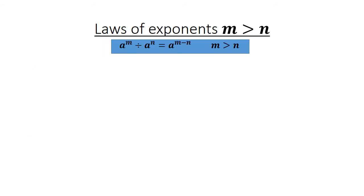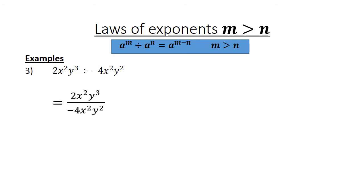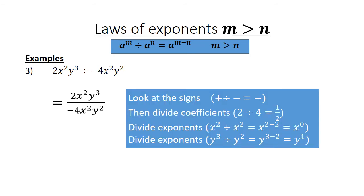Laws of exponents. 2x to the power of 2, y to the power of 3, divided by negative 4, x to the power of 2, y to the power of 2 equals. Now you are going to divide — look at the signs first. A positive divided by a negative equals negative. The coefficients: 2 divided by 4 equals 1 over 2.